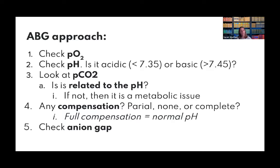Finally, look at compensation — check the opposite system. Is there partial, complete, or no compensation? If the pH is abnormal, compensation is incomplete. If pH is normal, compensation is complete. Then check the anion gap. Practice questions are the best way to solidify this approach.